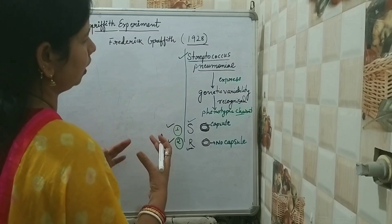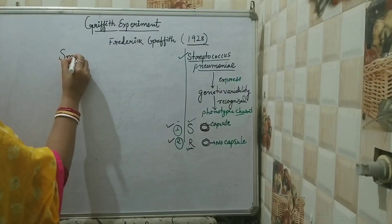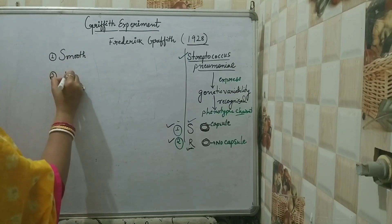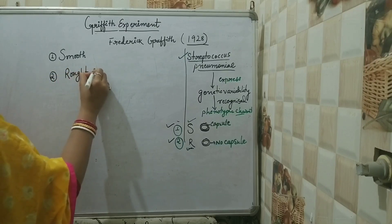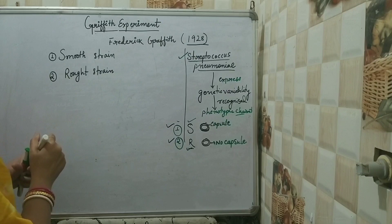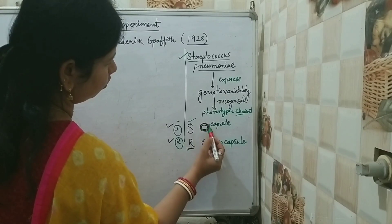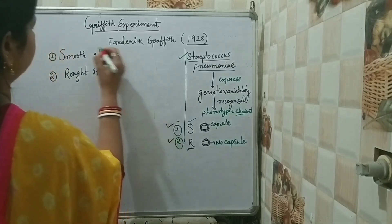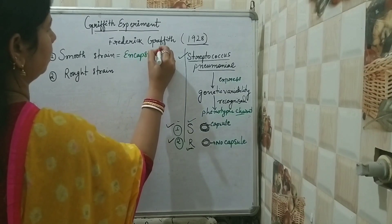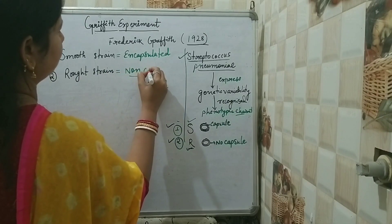Two important phenotypic characteristics of this bacterial strain proved very helpful in Griffith's experiment. The first one is smooth strain and the second one is rough strain. Smooth strain has a polysaccharide layer known as a polysaccharide capsule, so it is an encapsulated strain. Rough strain is without any capsule, so it is a non-capsulated strain.